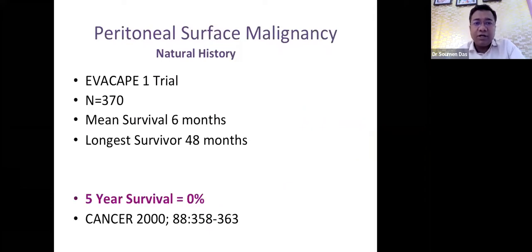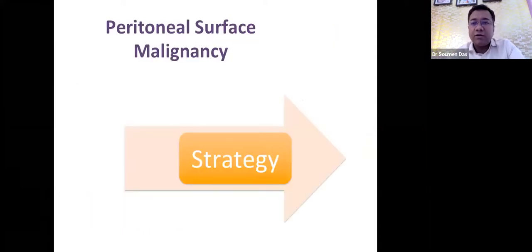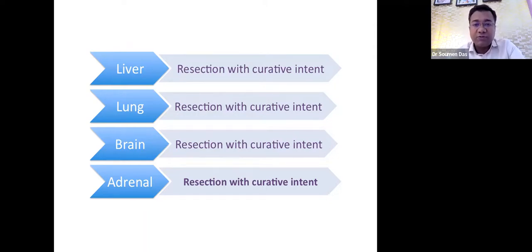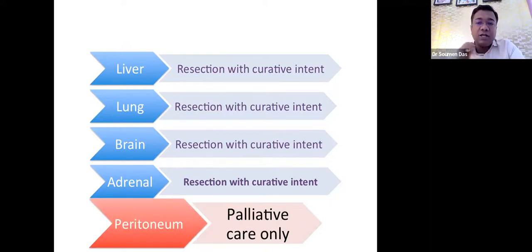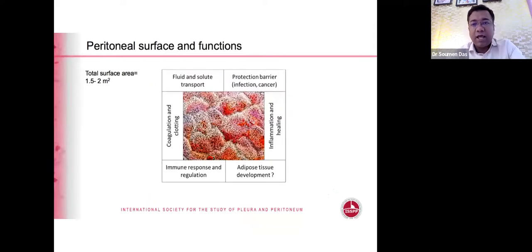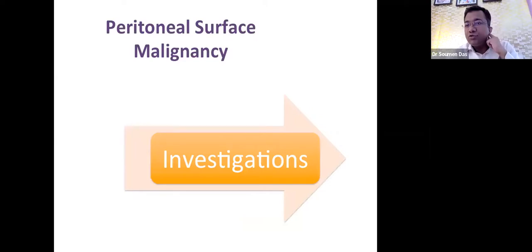Looking at the natural history of peritoneal surface cancers, in 2000 the reported five-year survival was zero percent. With advancement of techniques, survival has increased. For GI cancers, when liver metastasis is found from colorectal cancer, we resect it with curative intent — similarly for lung, adrenal, or brain metastasis. But for peritoneum, it is still treated as palliative care worldwide. Remember, the peritoneum is an organ with its own blood supply and venous drainage through the portal venous system, so it needs to be addressed separately.